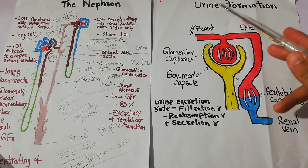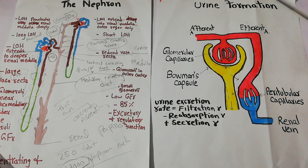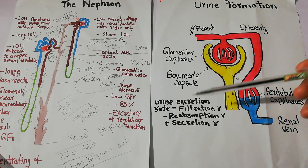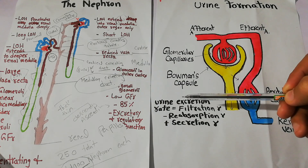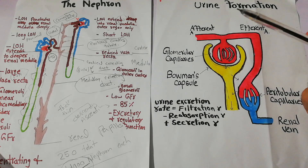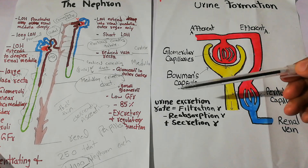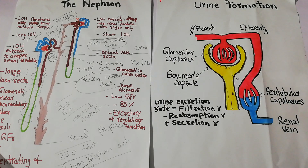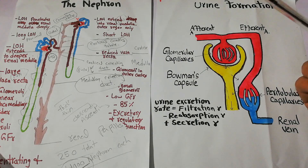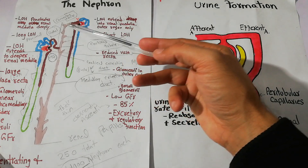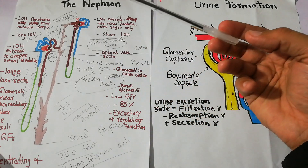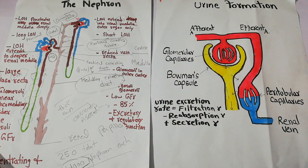Today we are going to start discussing urine formation and the first topic in urine formation is the urine excretion rate. To understand the urine excretion rate we must know how urine formation begins and how the urine excretion starts. Urine formation basically begins at the level of nephrons and in each kidney there are thousands of nephrons.